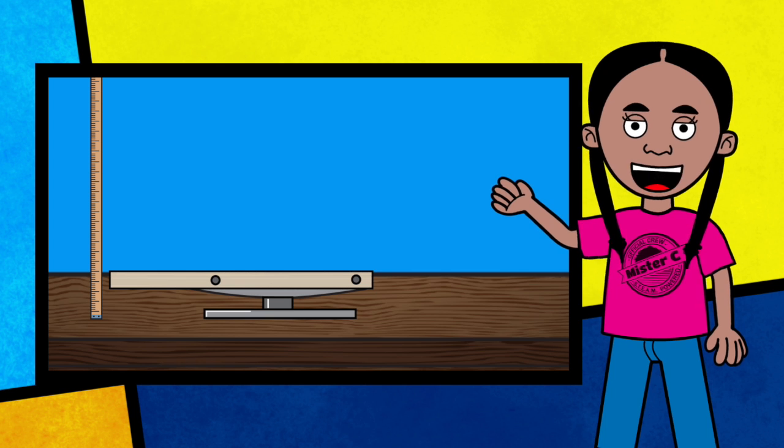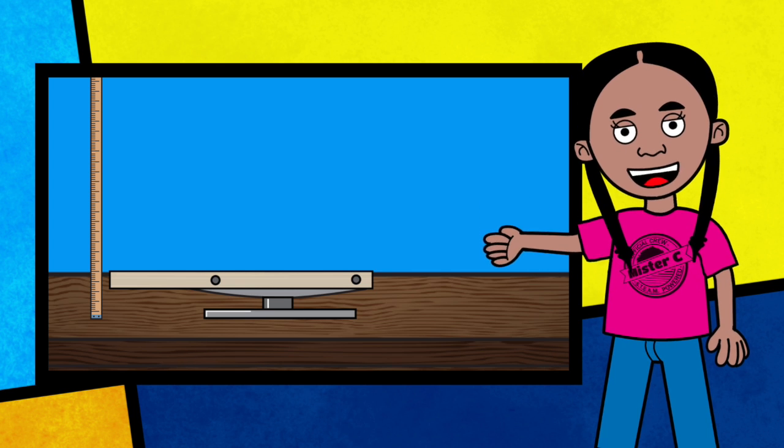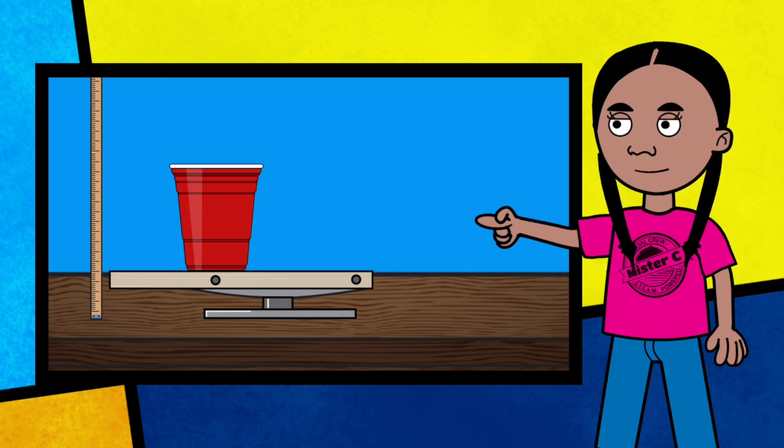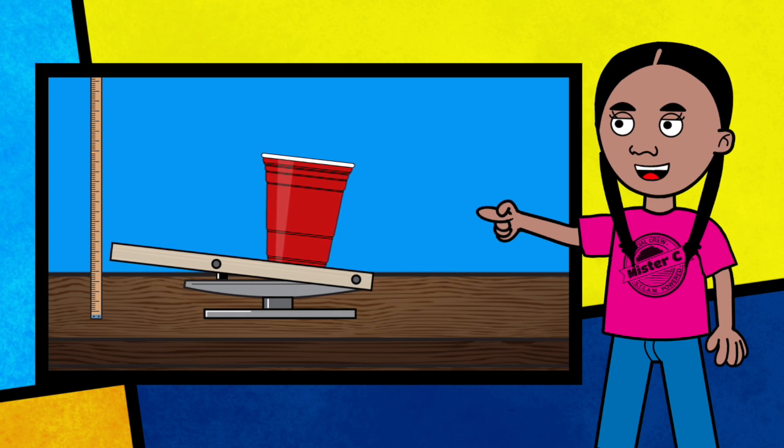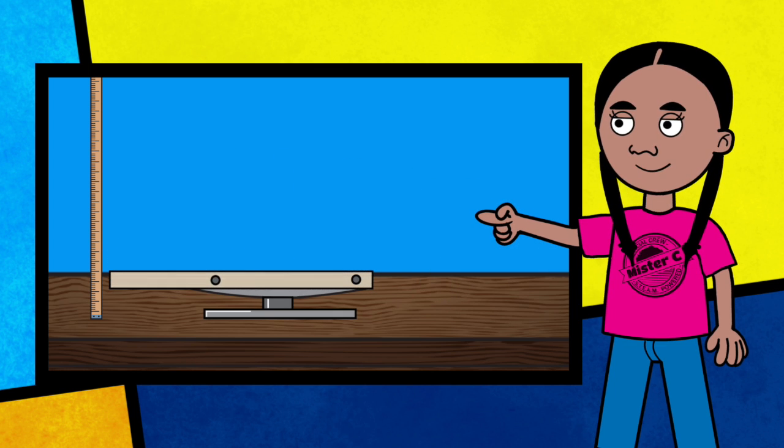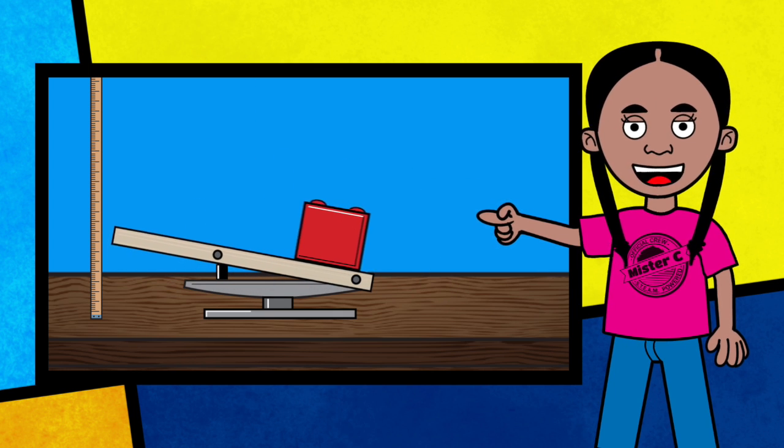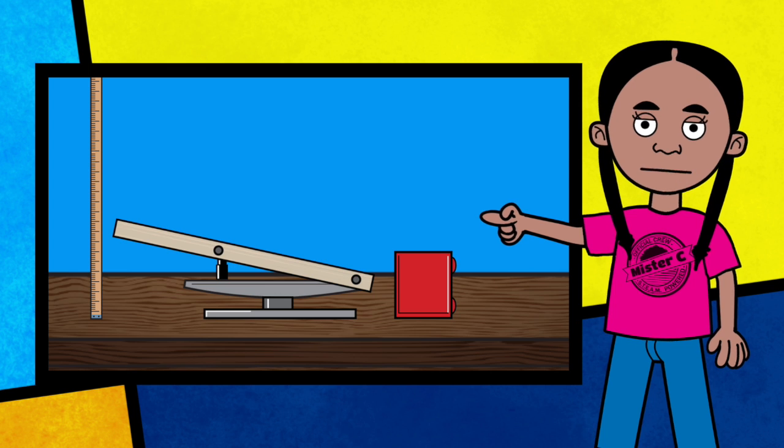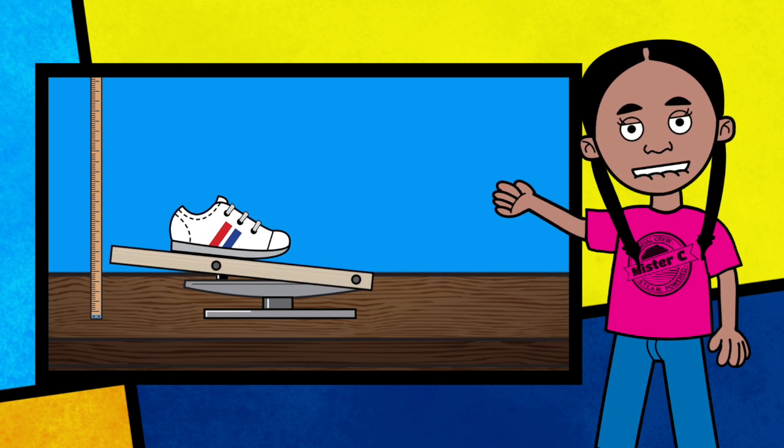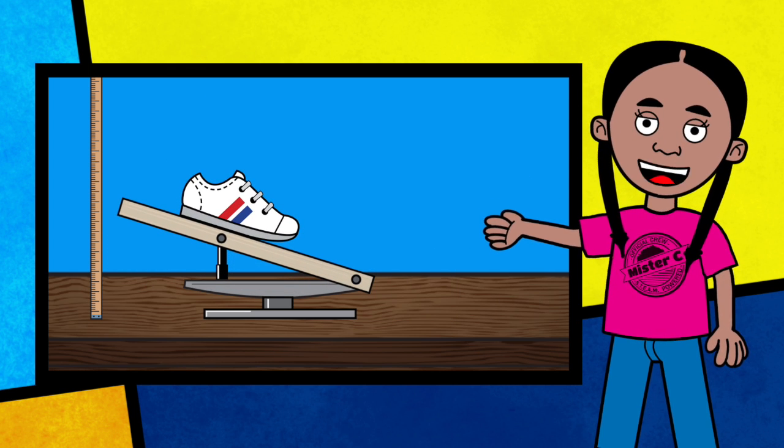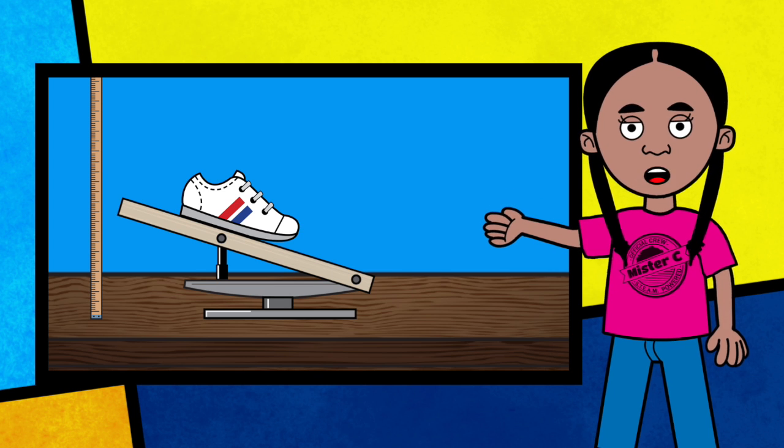Here's a fun experiment you can try at home. Build a ramp and then find objects to place on the ramp. Slowly lift the ramp until the object begins sliding. The moment it starts sliding is the moment the force of gravity overcomes the friction holding it in place. Test different objects to see which creates the most and least amount of friction with your ramp.